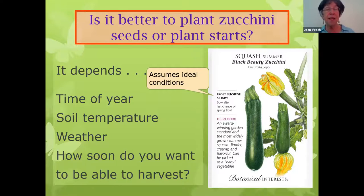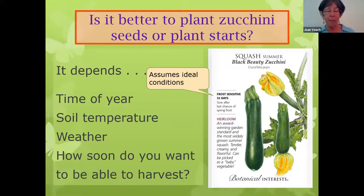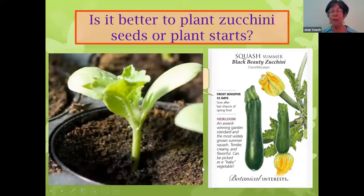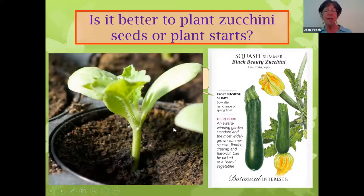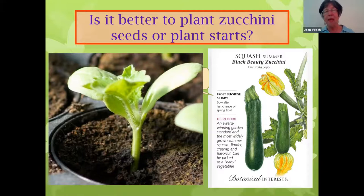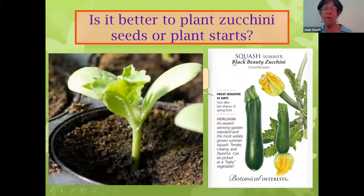It probably assumes a 60-degree soil temperature, which you don't have right now, and it assumes warm weather. If you've lived in this area very long, you know that sometimes we get really cold, dreary weather in June. If you want to harvest as soon as possible, you probably want to buy starts — meaning somebody else started the seed for you and here it is ready to grow. A lot of times the starts are bigger than this when you buy them. These can speed along when you get to harvest your crop by three weeks or even a month, depending on how cold June is. Starts obviously cost more than seeds, so that's something to factor in.